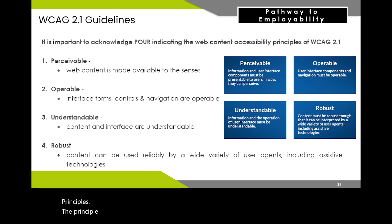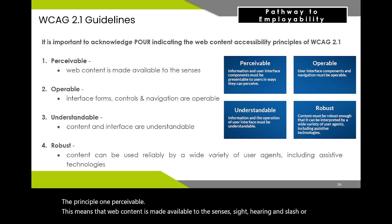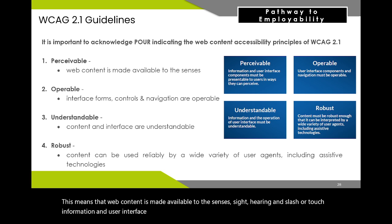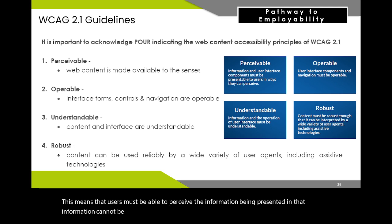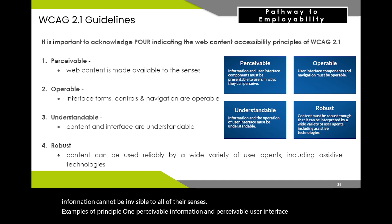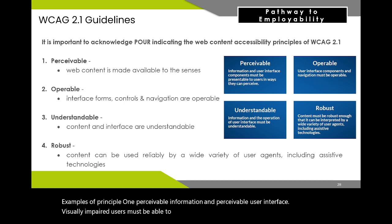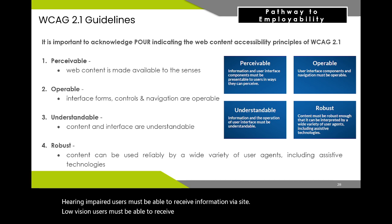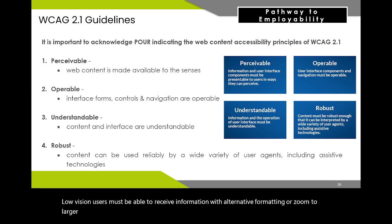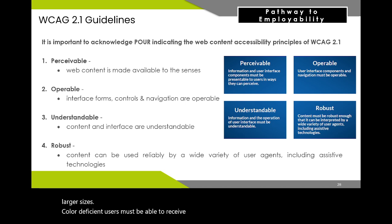Principle 1: Perceivable — web content is made available to the senses: sight, hearing, and/or touch. Information and user interface components must be presentable to users in ways they can perceive. Users must be able to perceive the information being presented and that information cannot be invisible to all of their senses. Examples include: visually impaired users must be able to receive information via sound or touch; hearing impaired users must be able to receive information via sight; low vision users must receive information with alternative formatting or zoomed to larger sizes; color deficient users must receive information without relying on color.